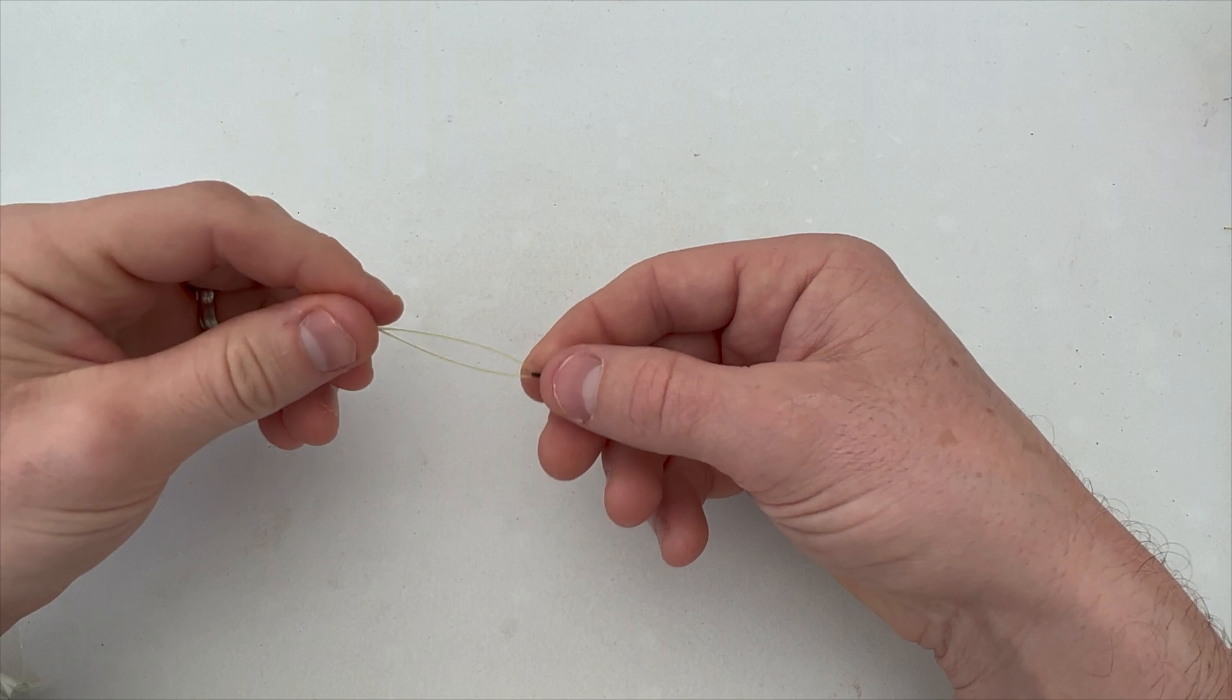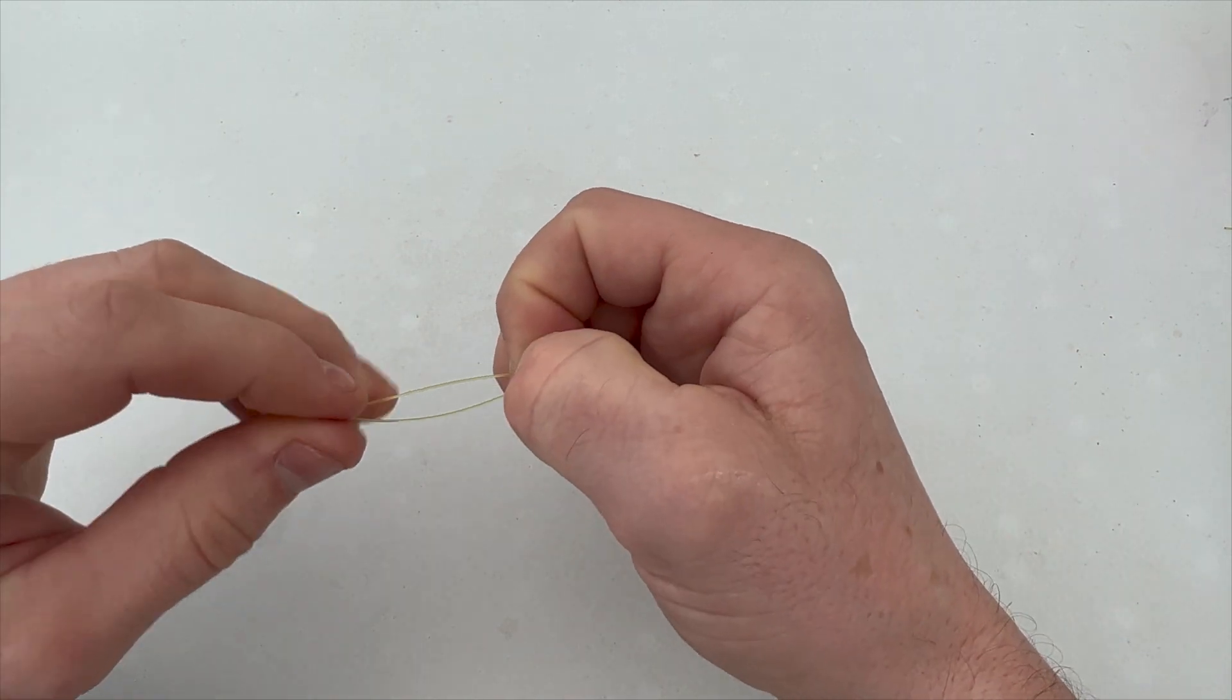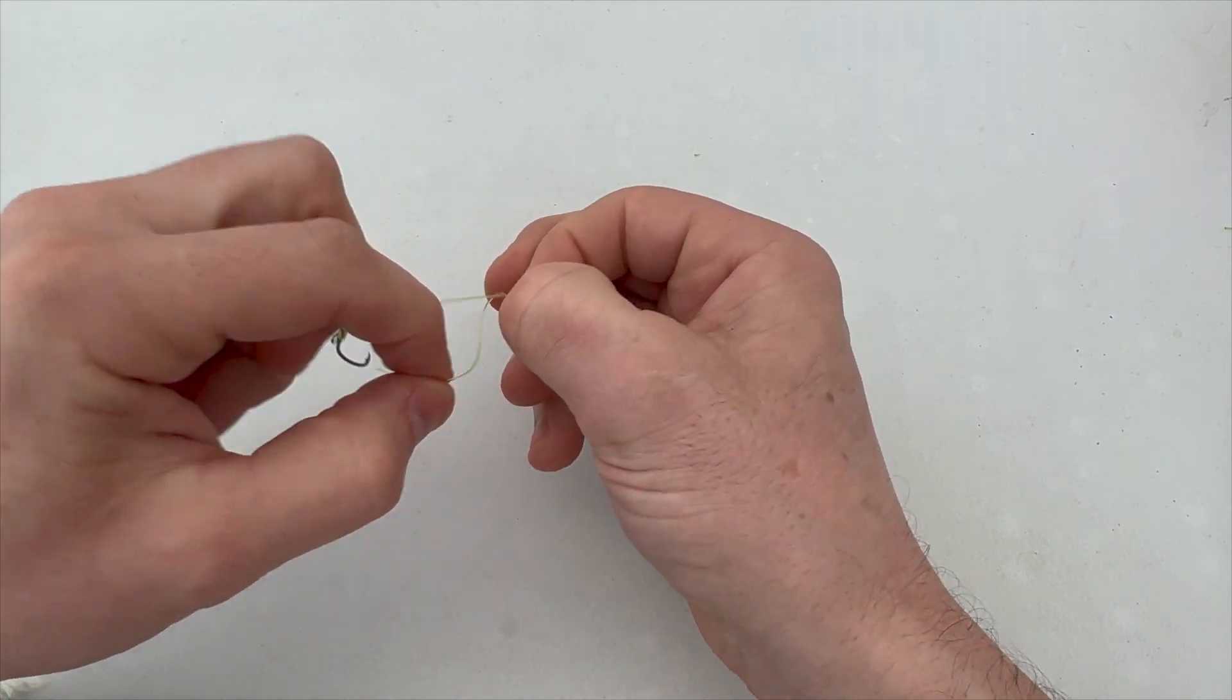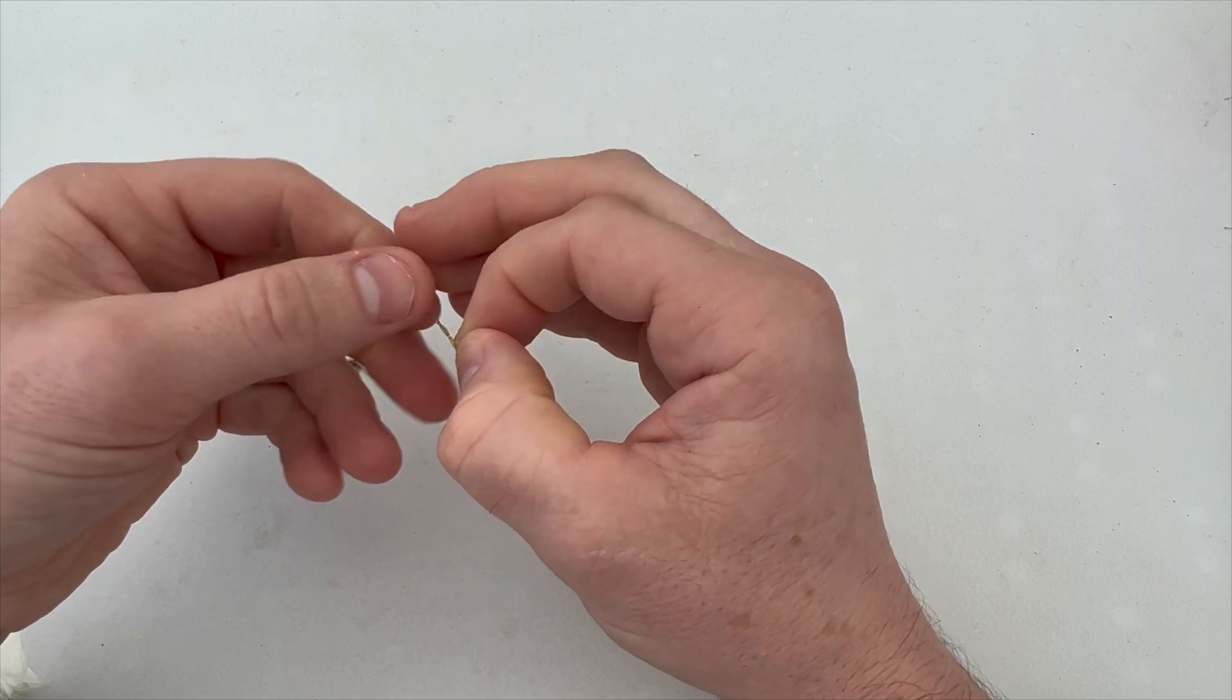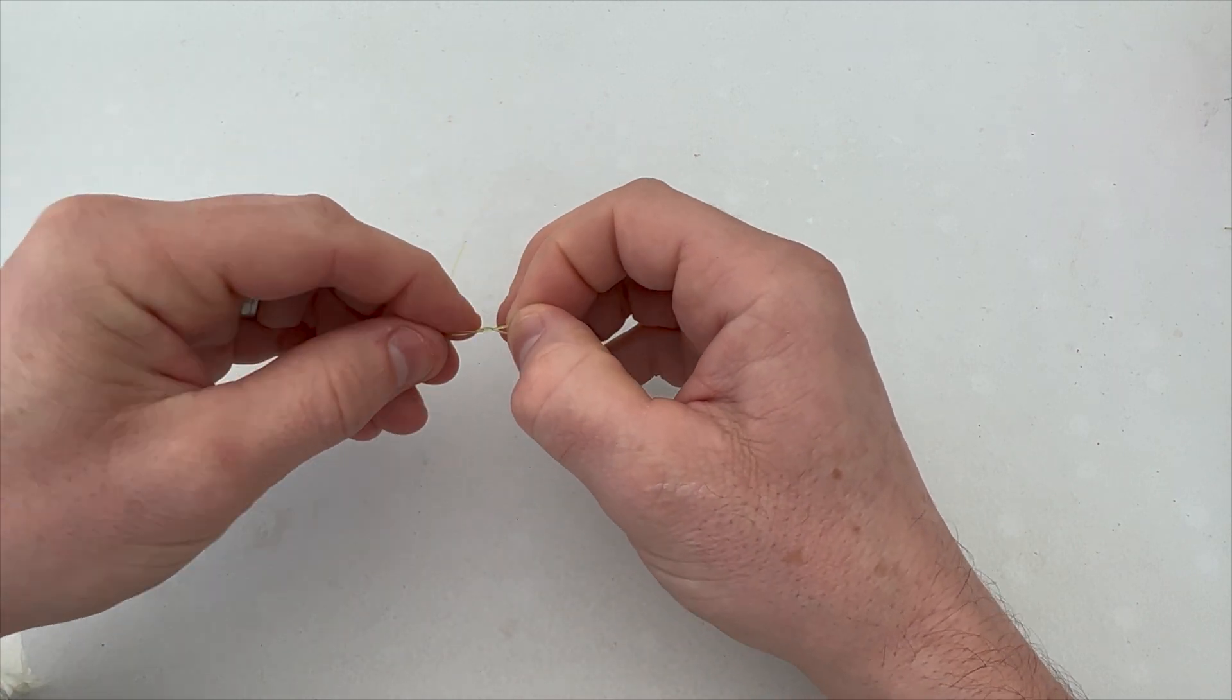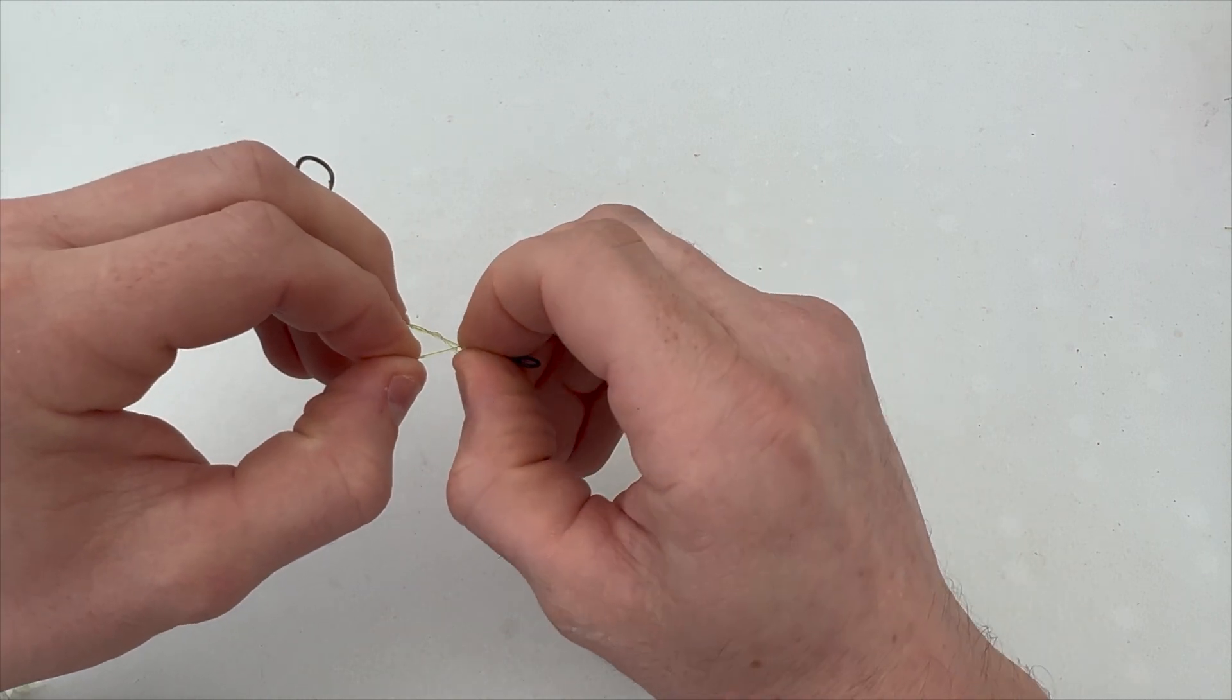Now with that folded over I will pinch the swivel and the line slightly to create a little gap. Now we're going to tie a half blood knot, so we only need really two turns because of the stiffness of this chod filament. I'm going to pass it back through the eye that we first created.